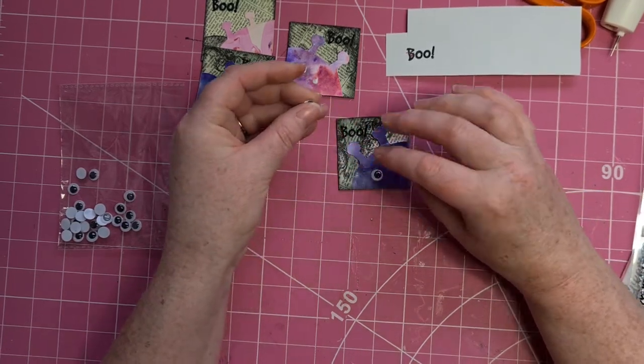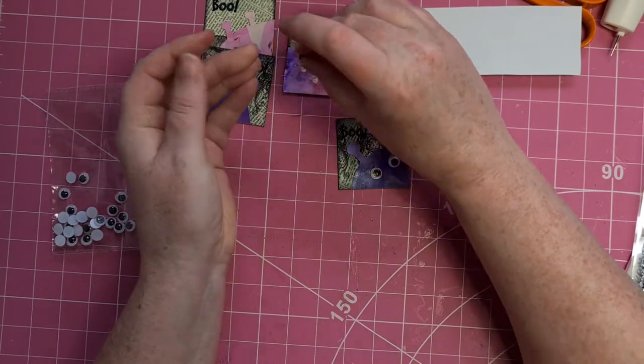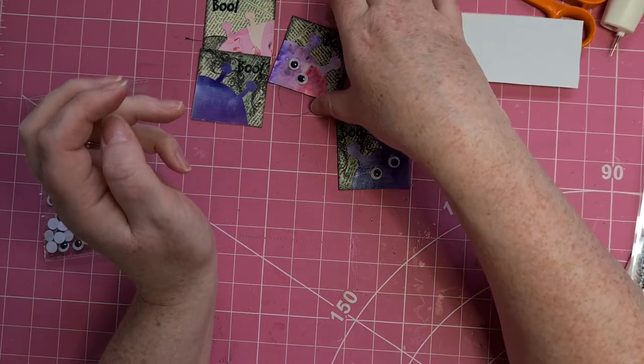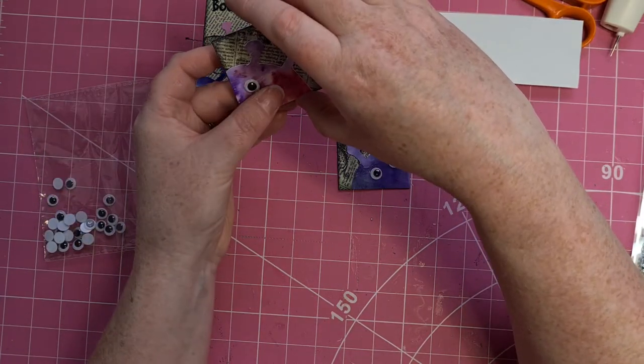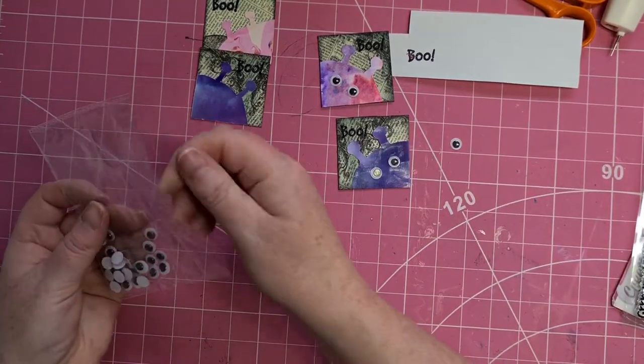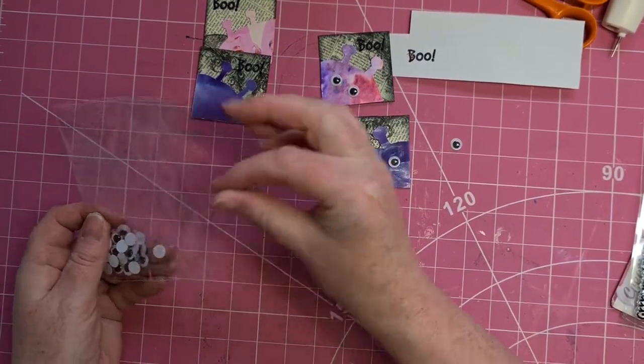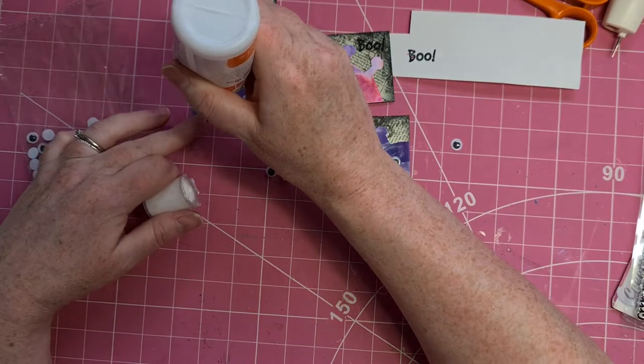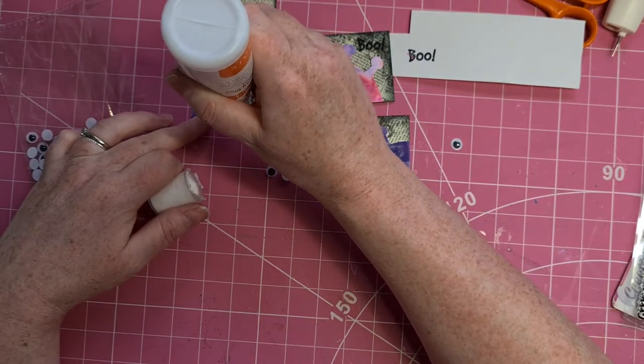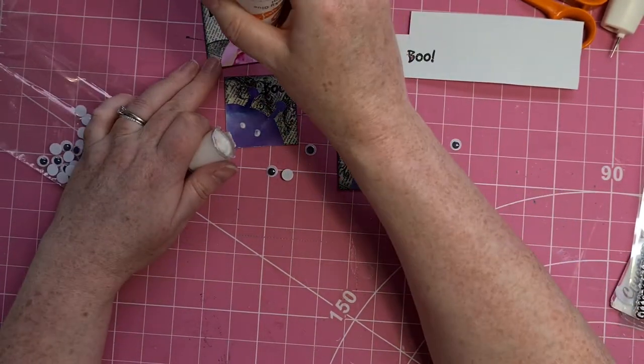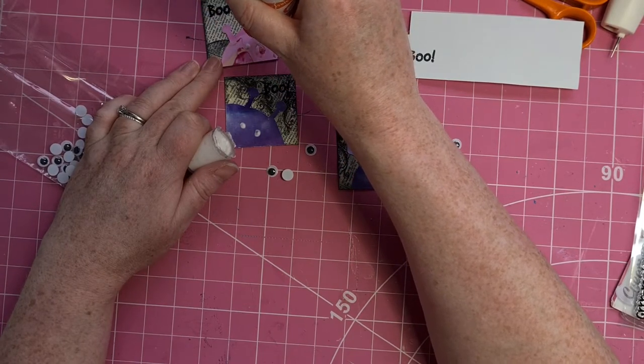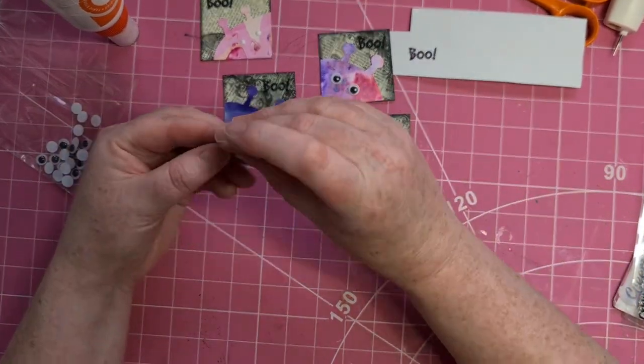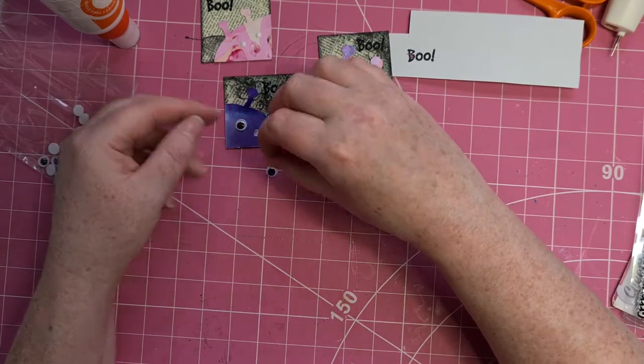I think these googly eyes might have come in a swap from the lovely Kim Kelly. Oh my god, there's two of them, I need another. I think if I had a bigger, if I had any bigger googly eyes I might do one with just one in the center of its head, but I think these ones are better. There's not quite big enough for that.